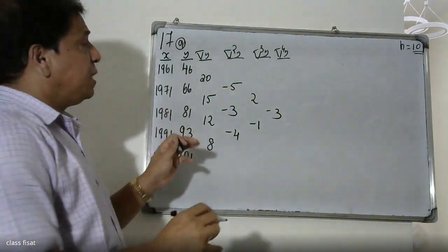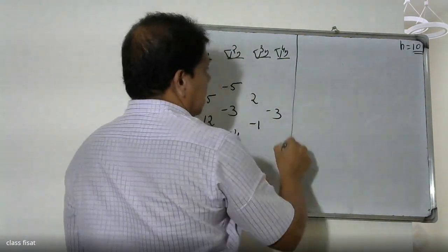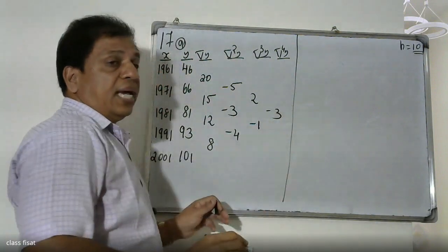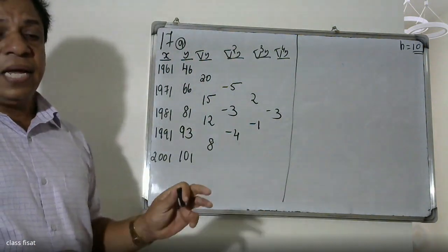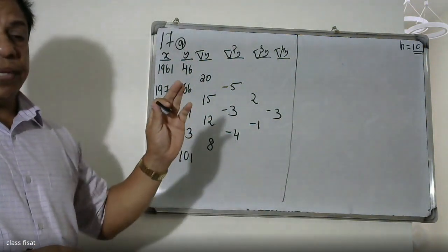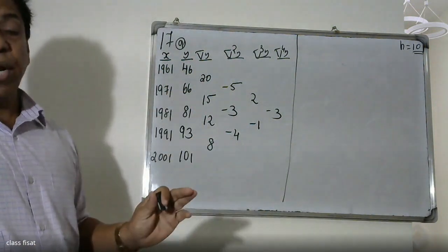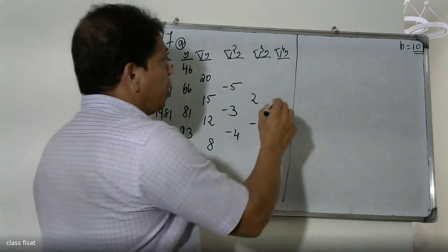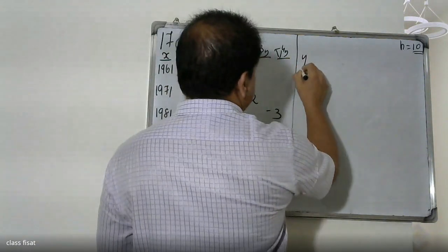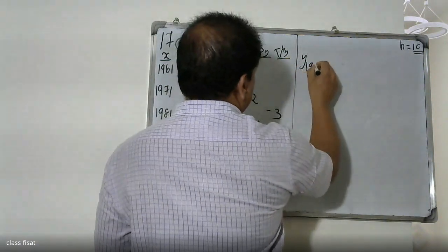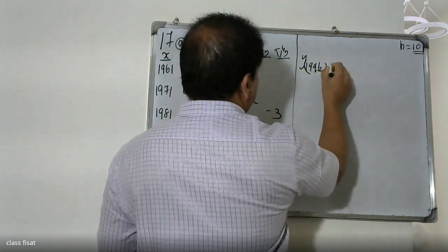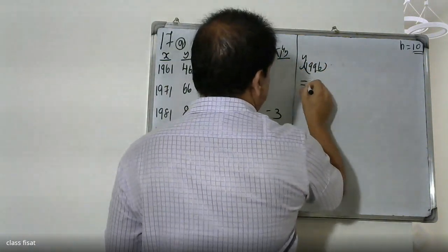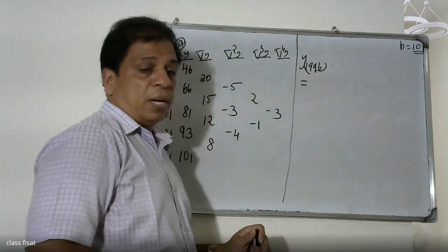In 1996, the population we need to find — by Y of 1996 — we need to find using Newton's backward interpolation formula.